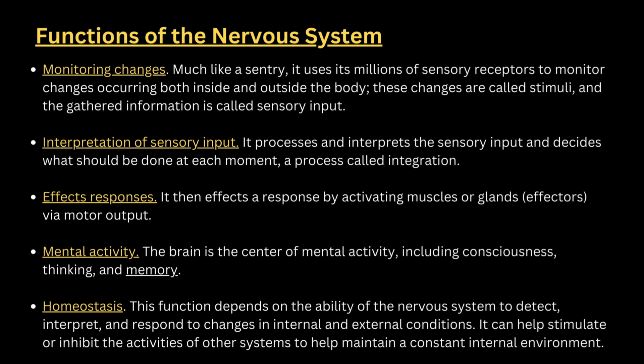We will see the functions of the nervous system. The functions of the nervous system are: first is monitoring changes, second is interpretation of sensory input, third is effect responses, fourth is mental activity, and fifth is homeostasis. In monitoring changes, these changes are called as stimuli and they gather information, which is called as sensory input.